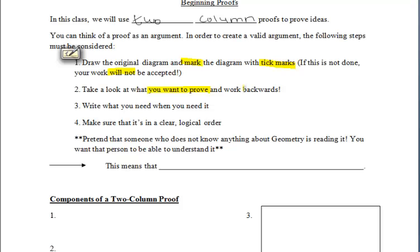Next, take a look at what you want to prove and work backwards to reach your conclusion. We want to pretend that someone who does not know a thing about geometry can read this proof and fully understand it.